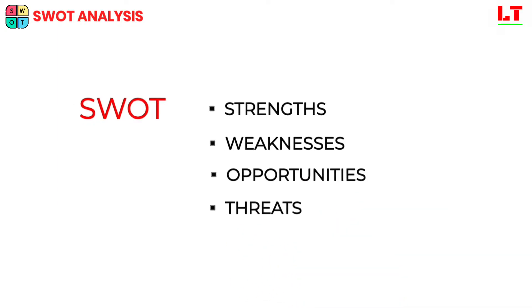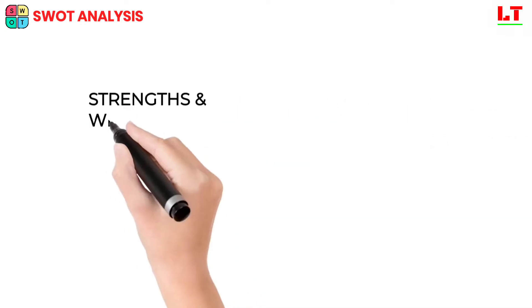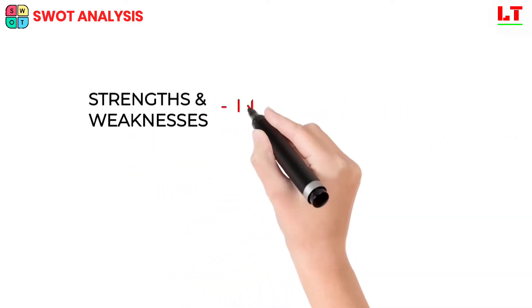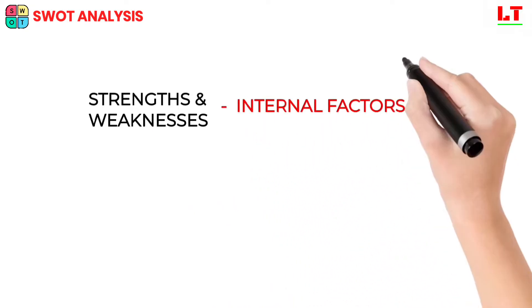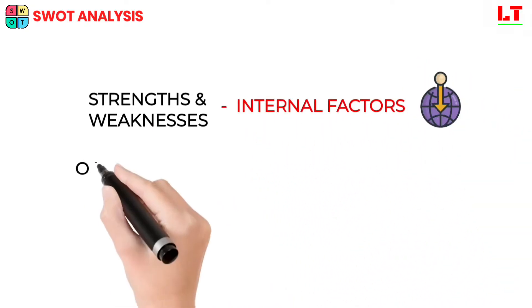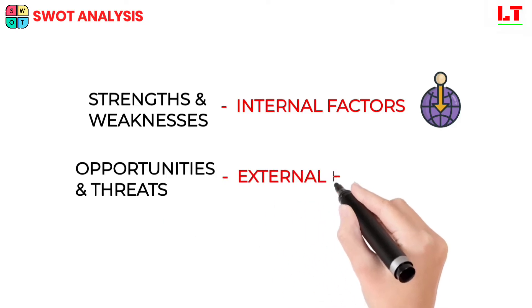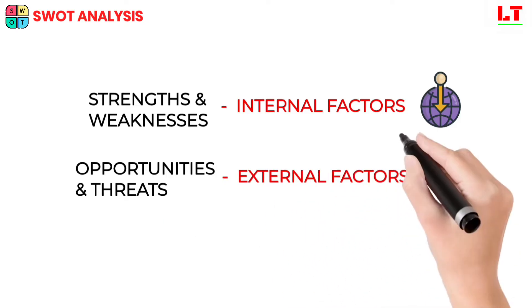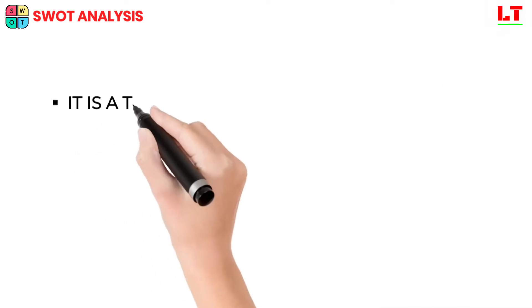By definition, strengths and weaknesses are considered to be internal factors over which you have some measure of control. Opportunities and threats are considered to be external factors over which you have essentially no control.